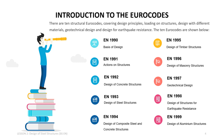The 10 Eurocodes are: Eurocode 0 – Basis of Design; Eurocode 1 – Actions on Structures; Eurocode 2 – Design of Concrete Structures; Eurocode 3 – Design of Steel Structures; Eurocode 4 – Design of Composite Steel and Concrete Structures; Eurocode 5 – Design of Timber Structures; Eurocode 6 – Design of Masonry Structures; Eurocode 7 – Geotechnical Design; Eurocode 8 – Design of Structures for Earthquake Resistance; Eurocode 9 – Design of Aluminium Structures.